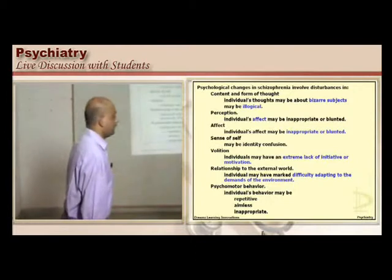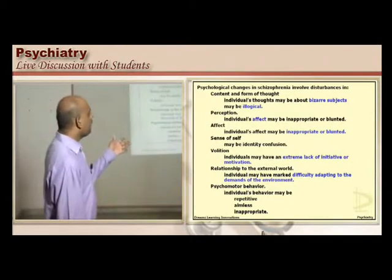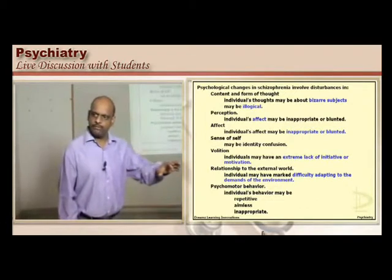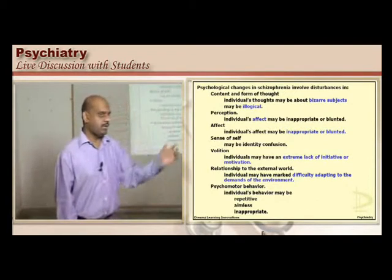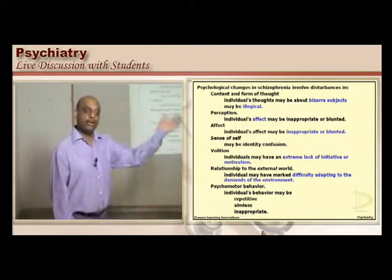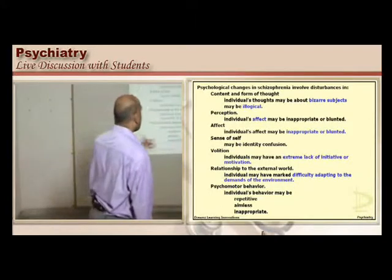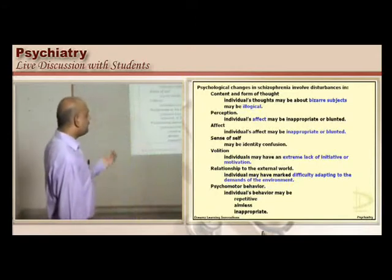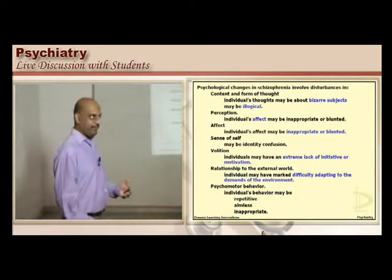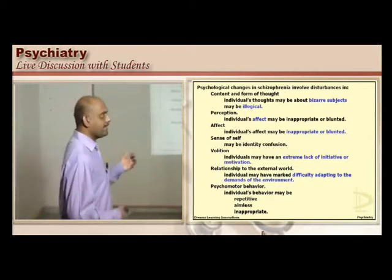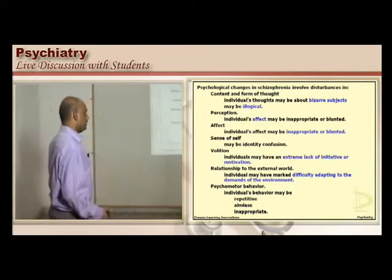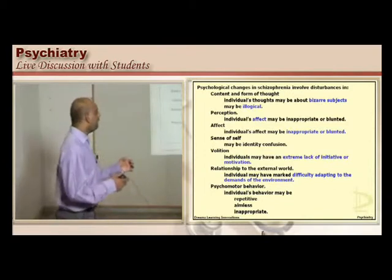Similarly, perception is affected. The individual's affect may be inappropriate to the given context — when news of a death is given, he starts to laugh; when news of a birth is given, he starts to cry. It can also become blunted. Affect is greatly affected, and there is identity confusion in the individual with schizophrenia.